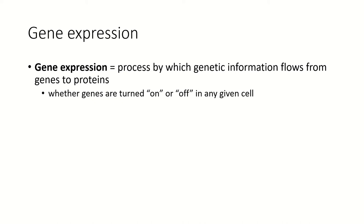At first thought this sounds kind of odd, like of course you only need certain genes in certain places, but remember that the cells in say the liver of a sea slug have all of the genes necessary to make all the parts of the sea slug — all the mucus-making cells, all the skin cells — although the liver doesn't need all of that. So how do cells control whether genes are turned on or off?